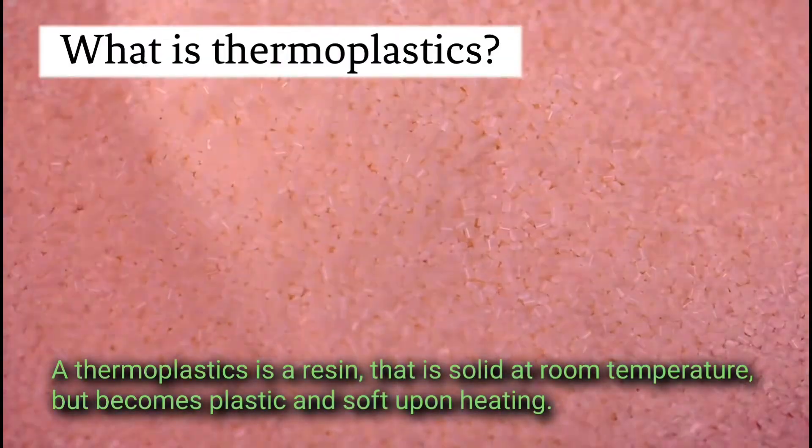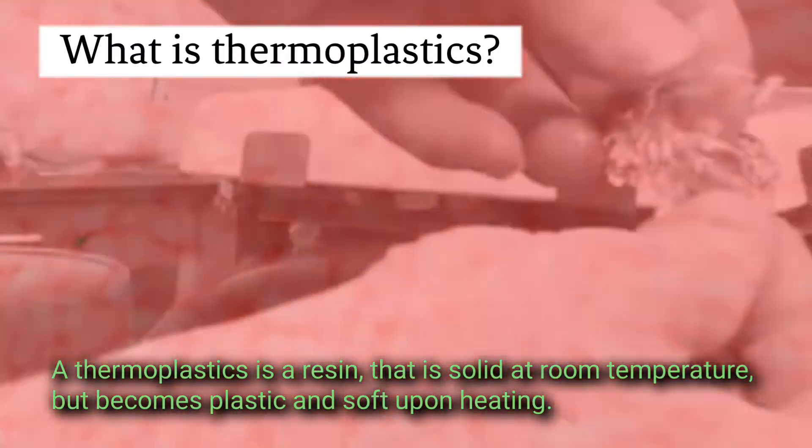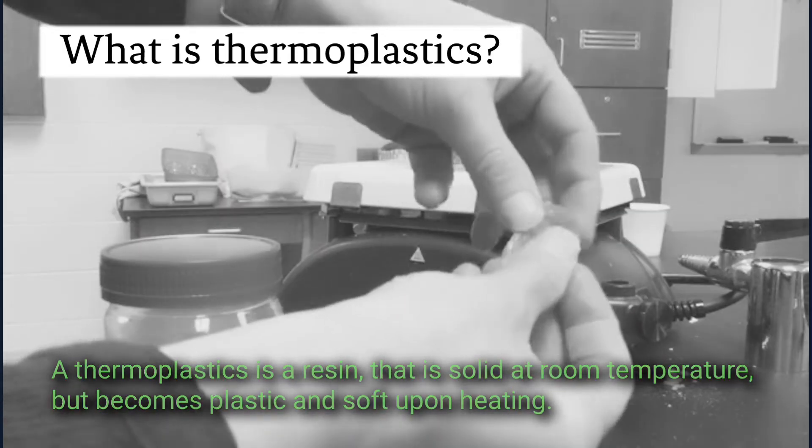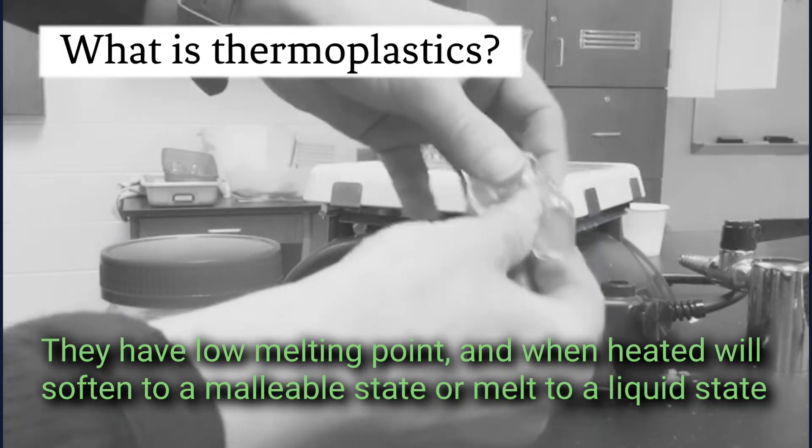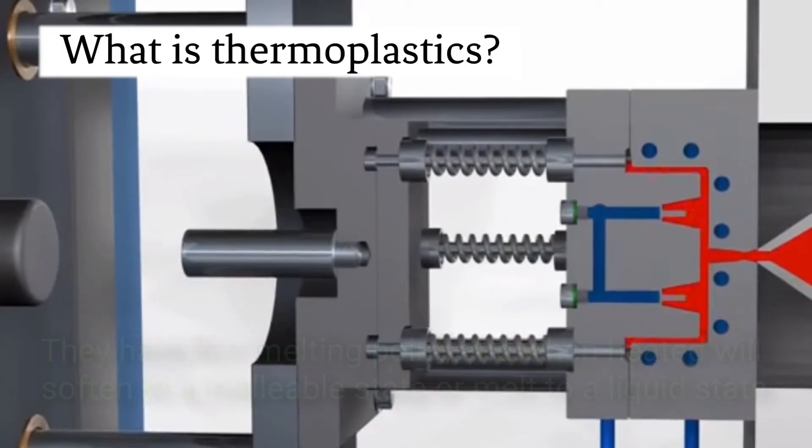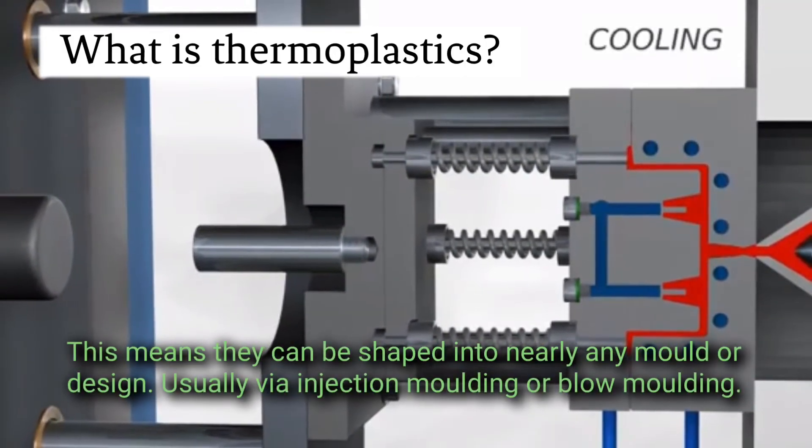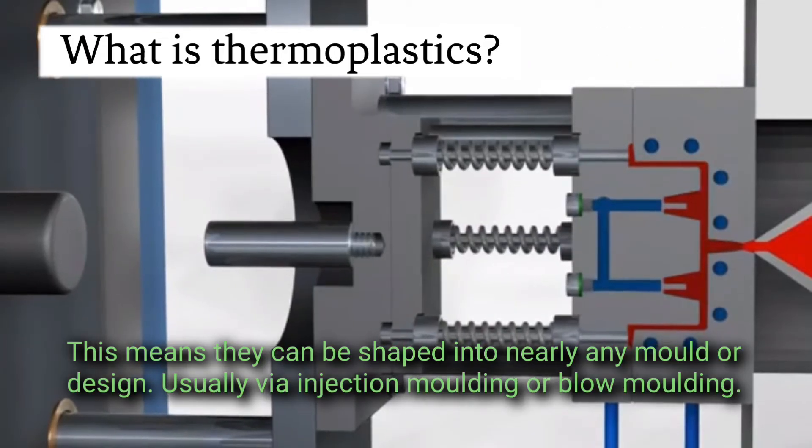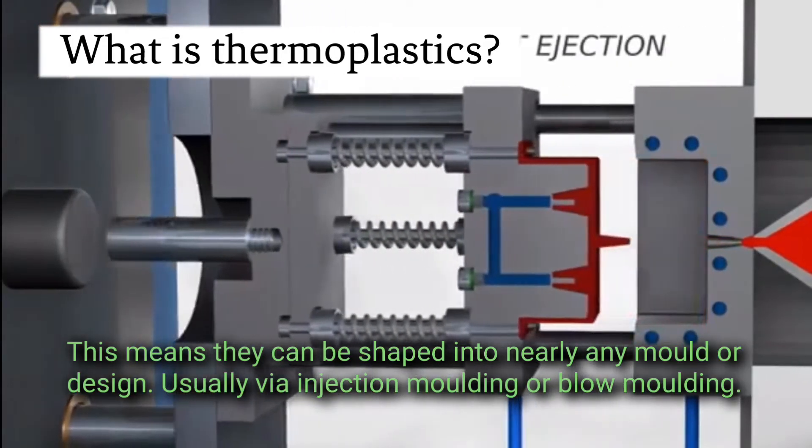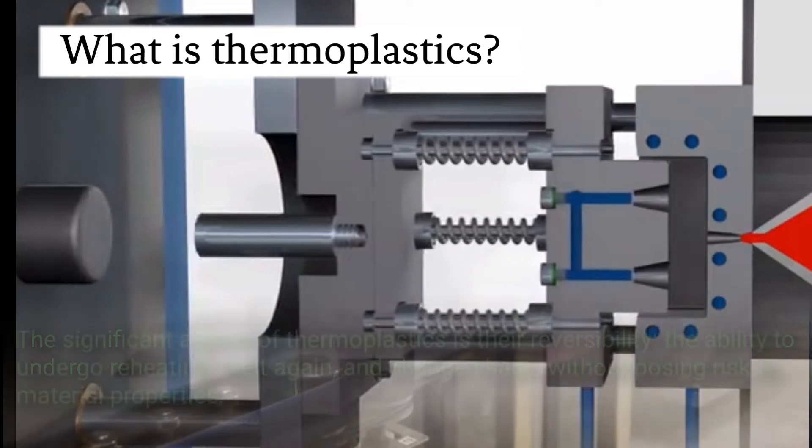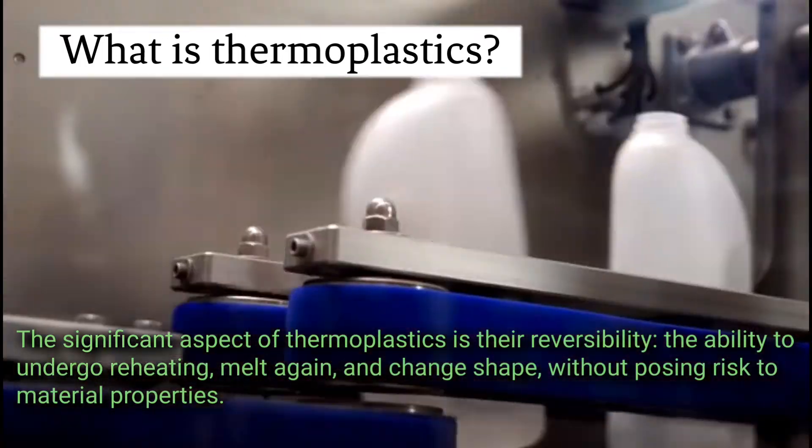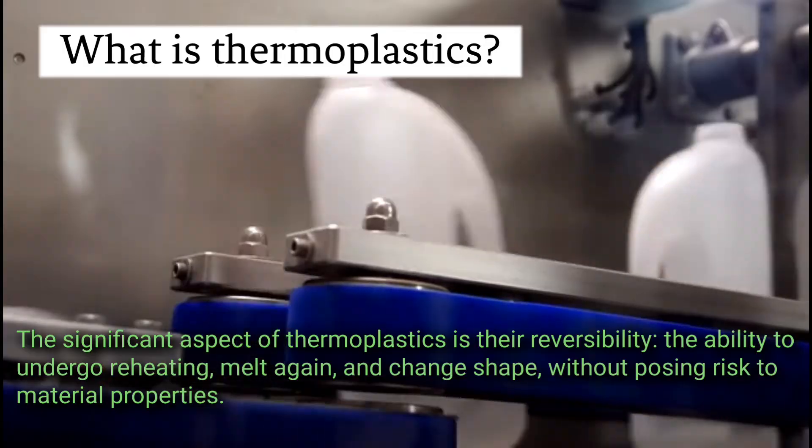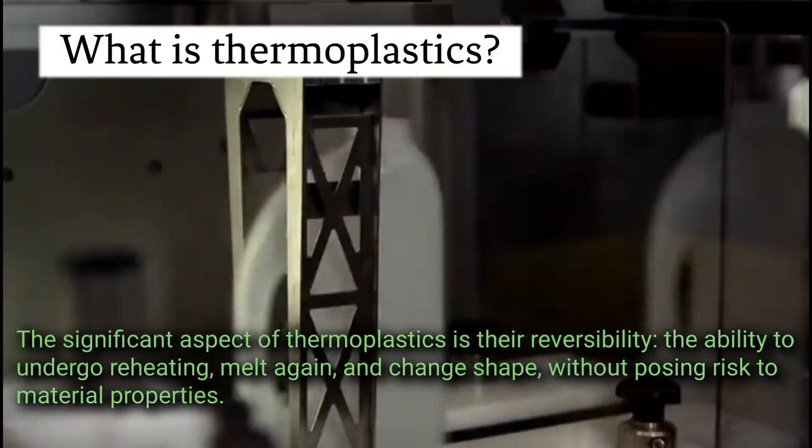What is thermoplastic? A thermoplastic is a resin that is solid at room temperature but becomes plastic and soft upon heating. They have low melting point and when heated will soften to a malleable state or melt to a liquid state. This means they can be shaped into nearly any mold or design, usually via injection molding or blow molding. The significant aspect of thermoplastic is their reversibility - the ability to undergo reheating, melt again, and change shape without posing a risk to material properties.